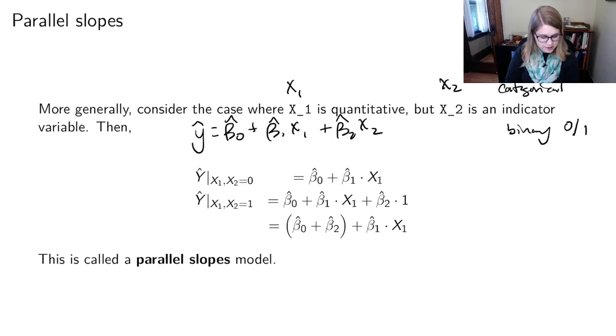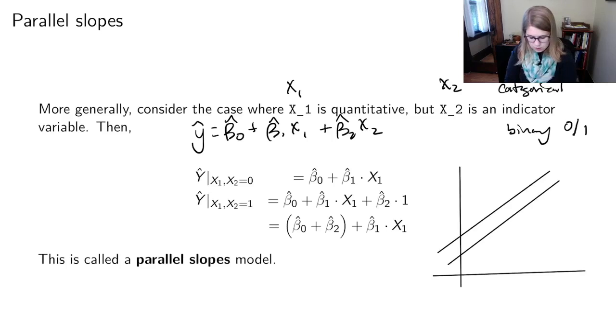And this is called a parallel slopes model. And the reason why it's called that is because it has parallel slopes. So you could think about parallel positive slopes. We could also have parallel negative slopes. Whatever the slope is, it would be parallel. So that's kind of a simple version of a multiple regression equation.